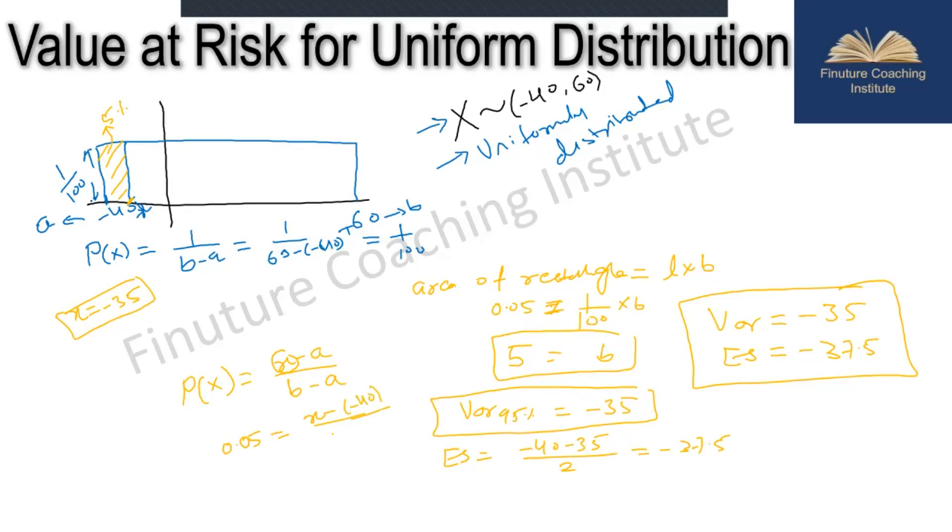So I will keep this as 5%. I have to find x, and my a is minus 40 and my b is 60. If we calculate, 0.05 equals x plus 40 divided by 100. Once we shift 100 to the other side, it would be 5 equals x plus 40, so x would be minus 35, what we got in the pictorial method.